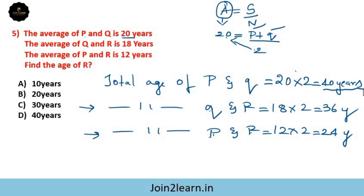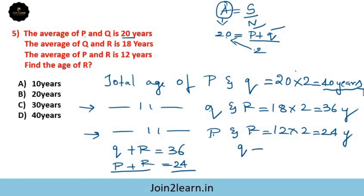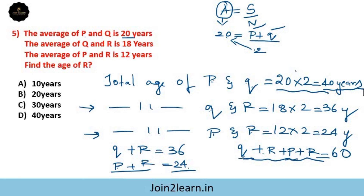Now add the equations: (Q plus R) plus (P plus R) equals 36 plus 24 equals 60. The combined terms give P plus Q plus 2R equals 60. Since P plus Q equals 40, we have 40 plus 2R equals 60, so 2R equals 20.